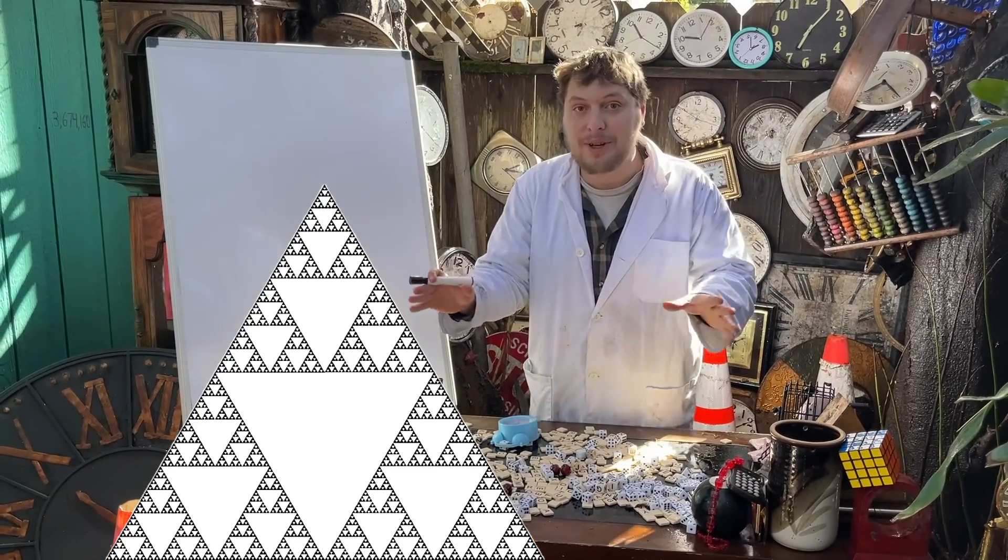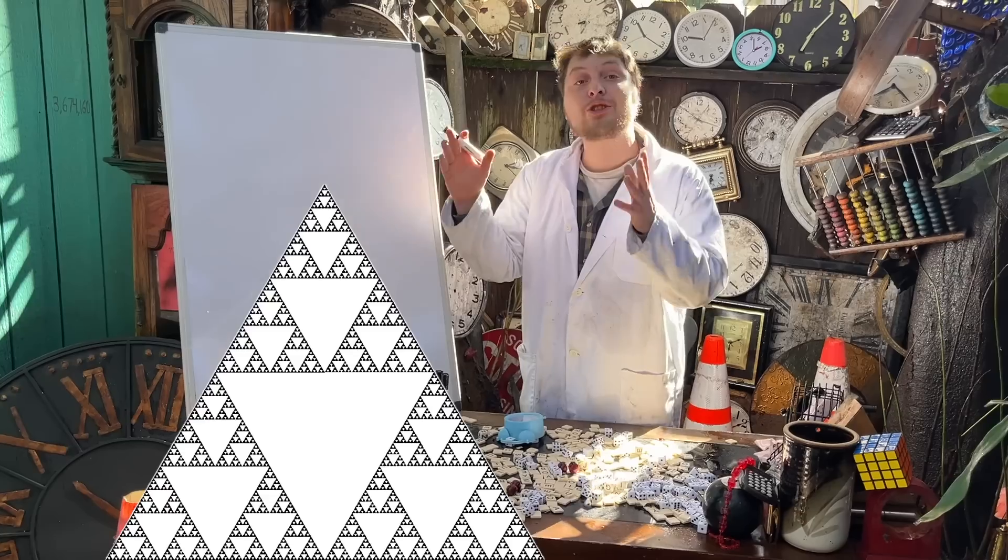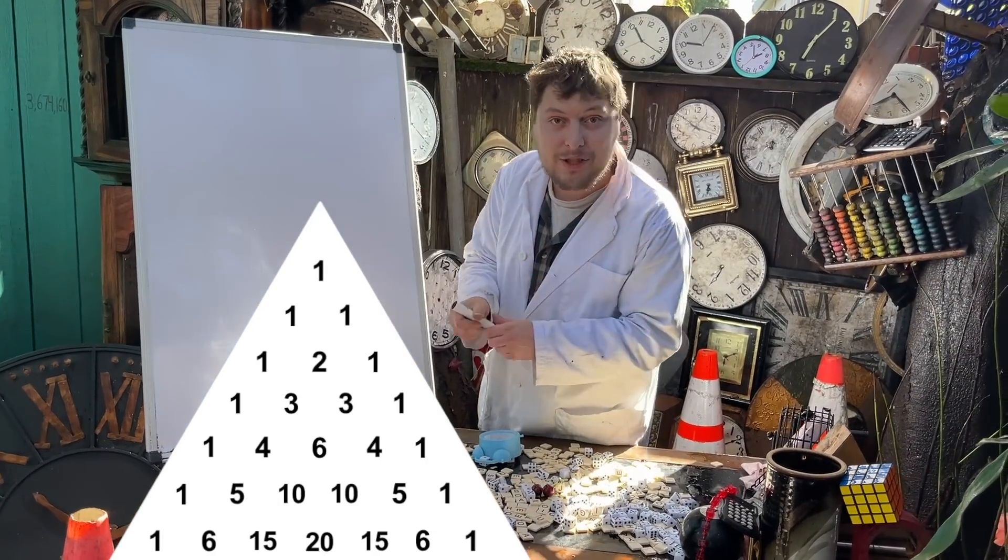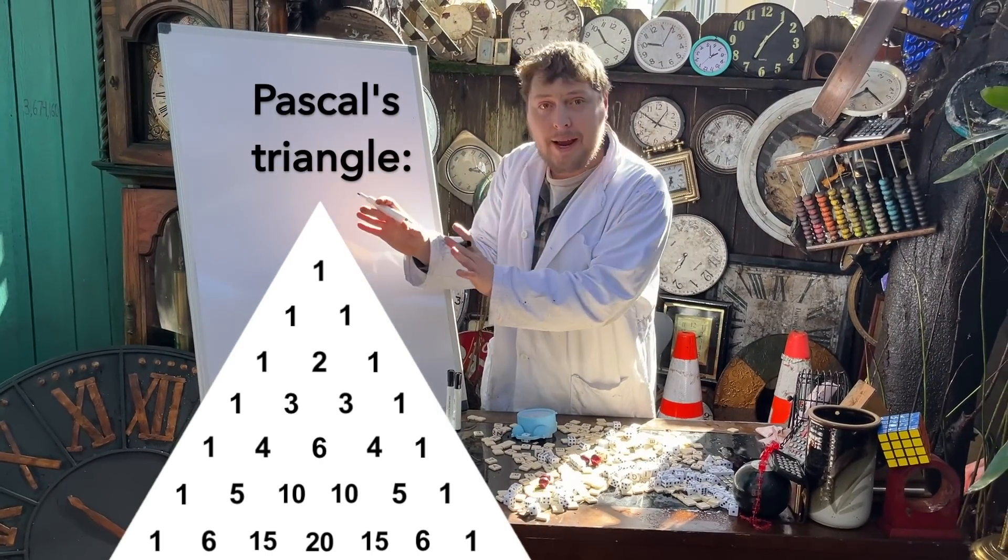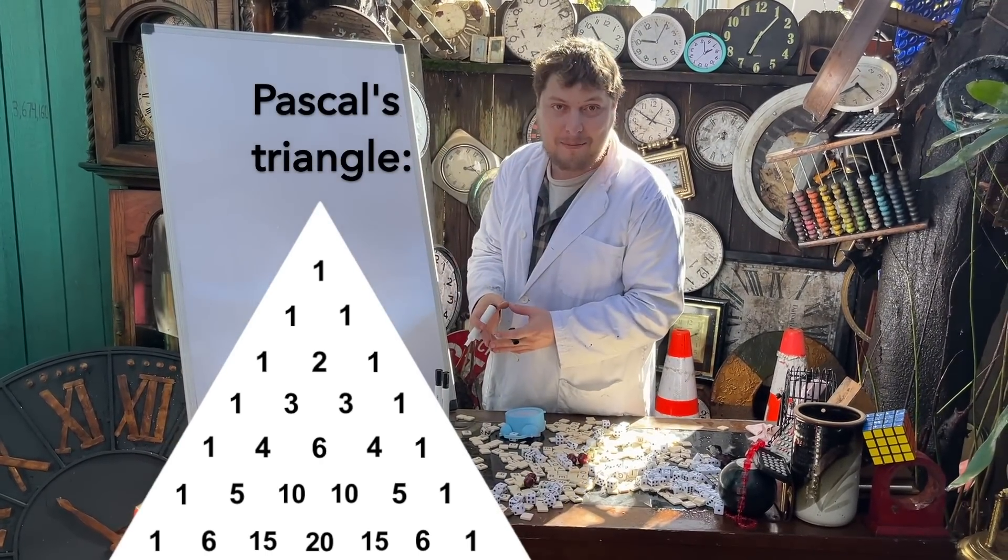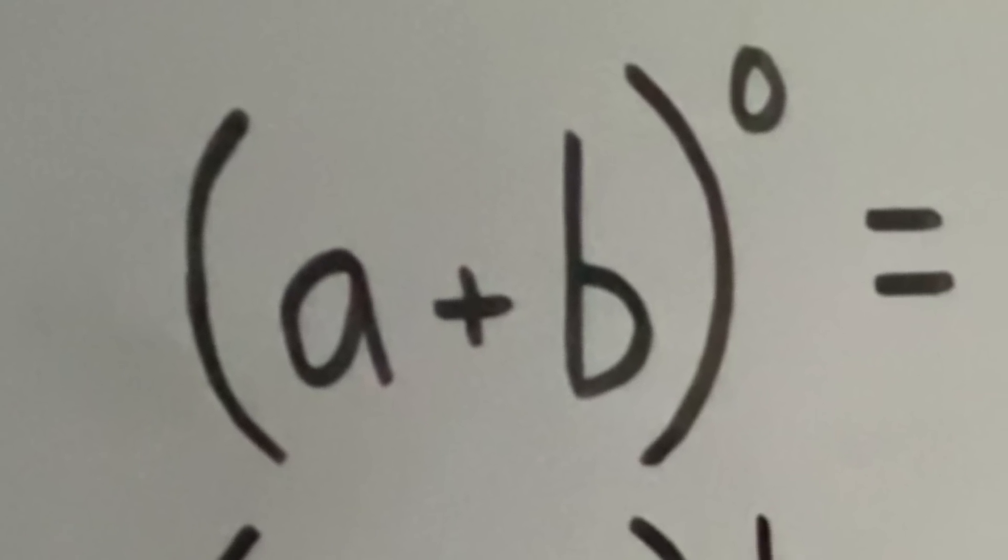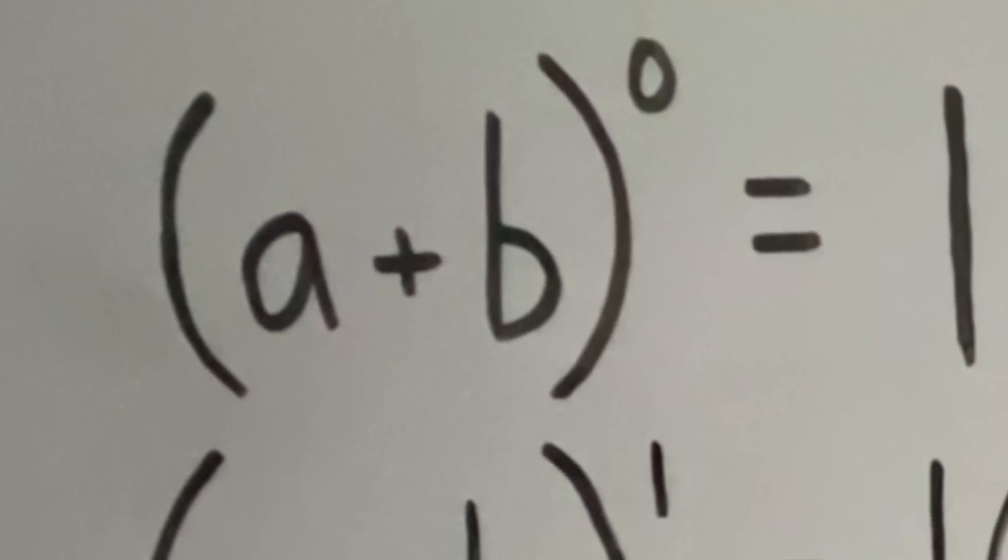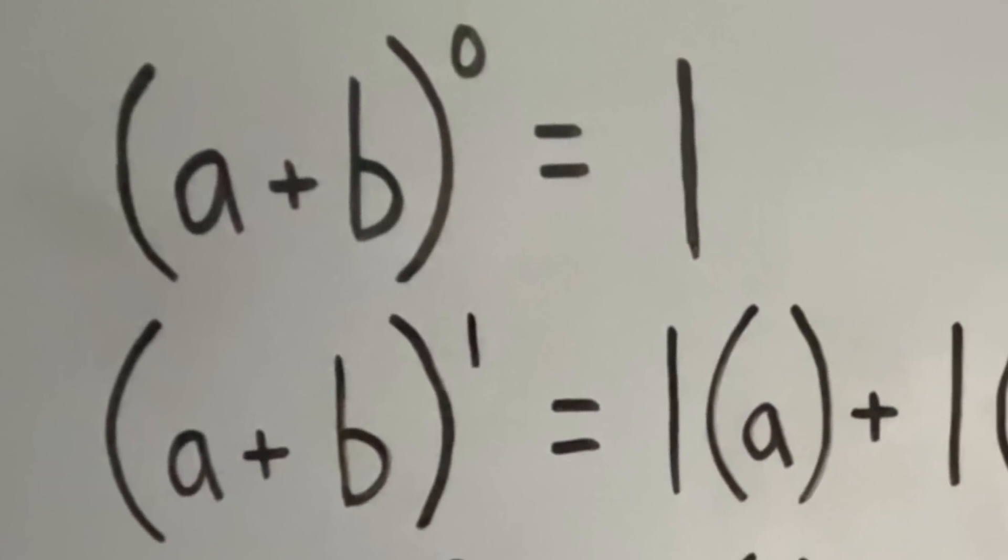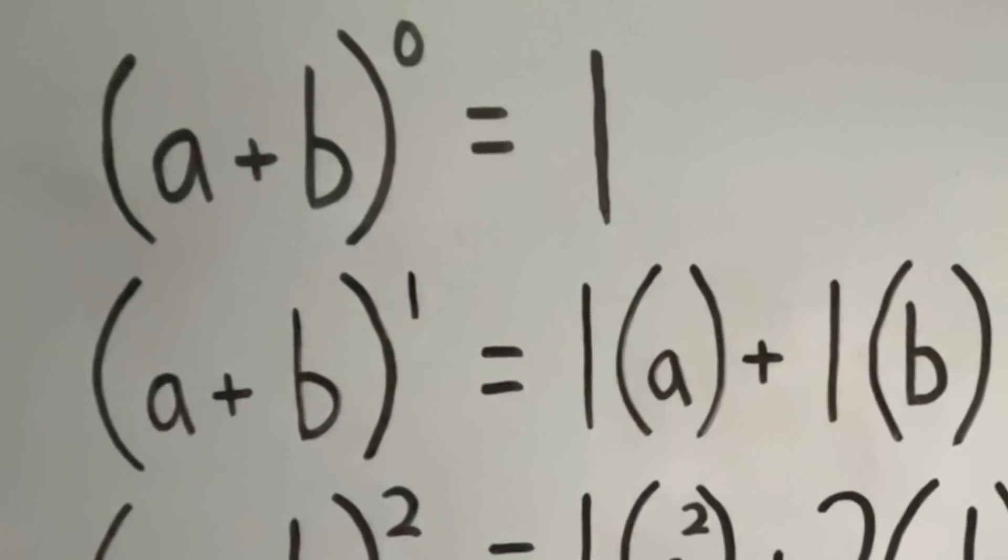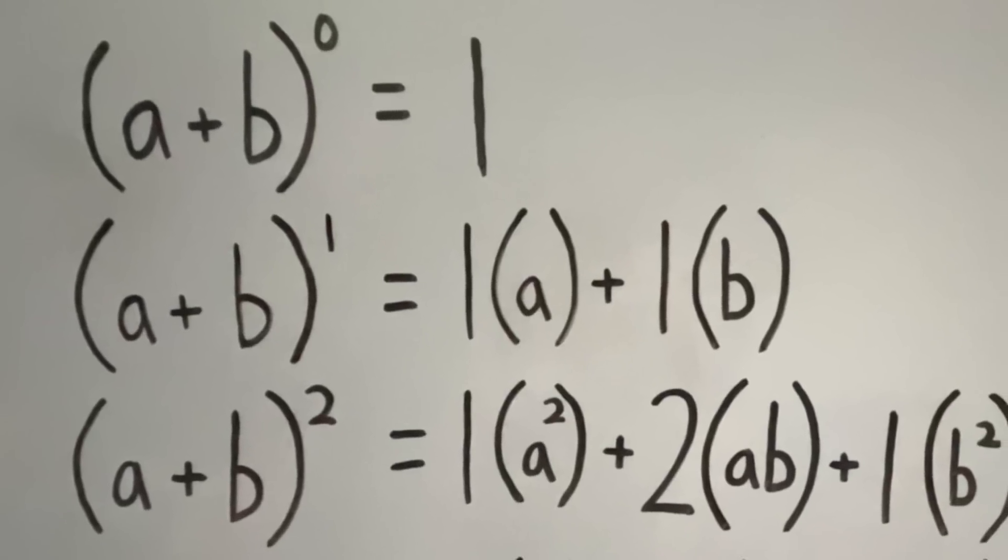Now let's set aside that geometric triangle for a moment to take a look at a seemingly unrelated triangle of numbers known as Pascal's triangle. There are many ways we could generate these numbers. For example, one of the ways that we could create or define Pascal's triangle is as an array of the coefficients we get in a binomial expansion. Meaning that if we take an expression like a plus b raised to different powers and just look at the coefficients of the result, those are the numbers in Pascal's triangle.